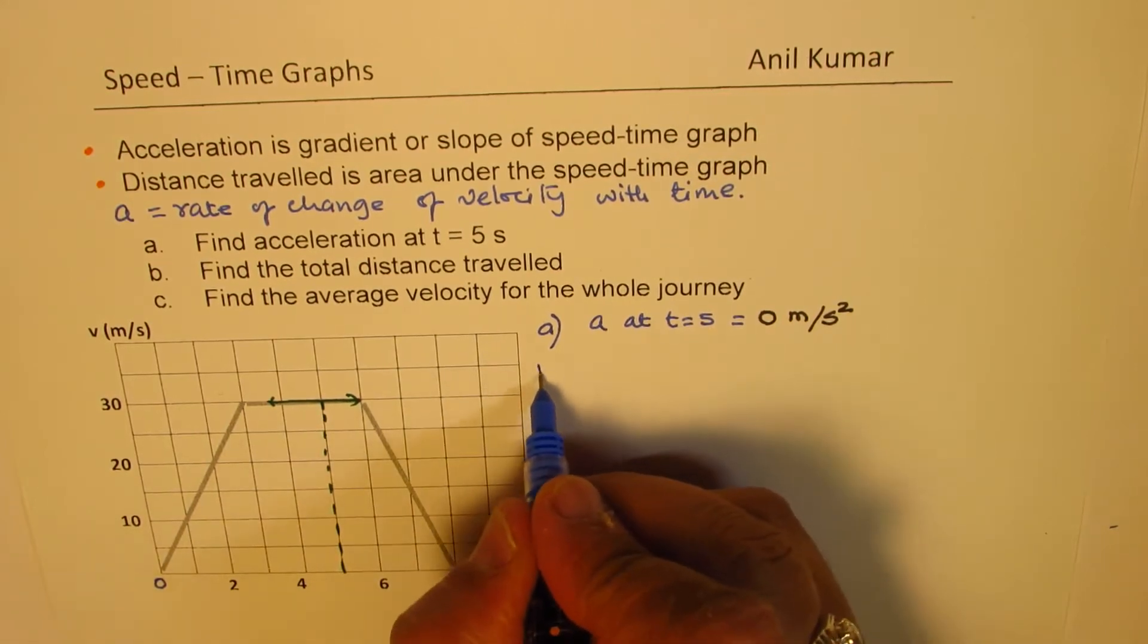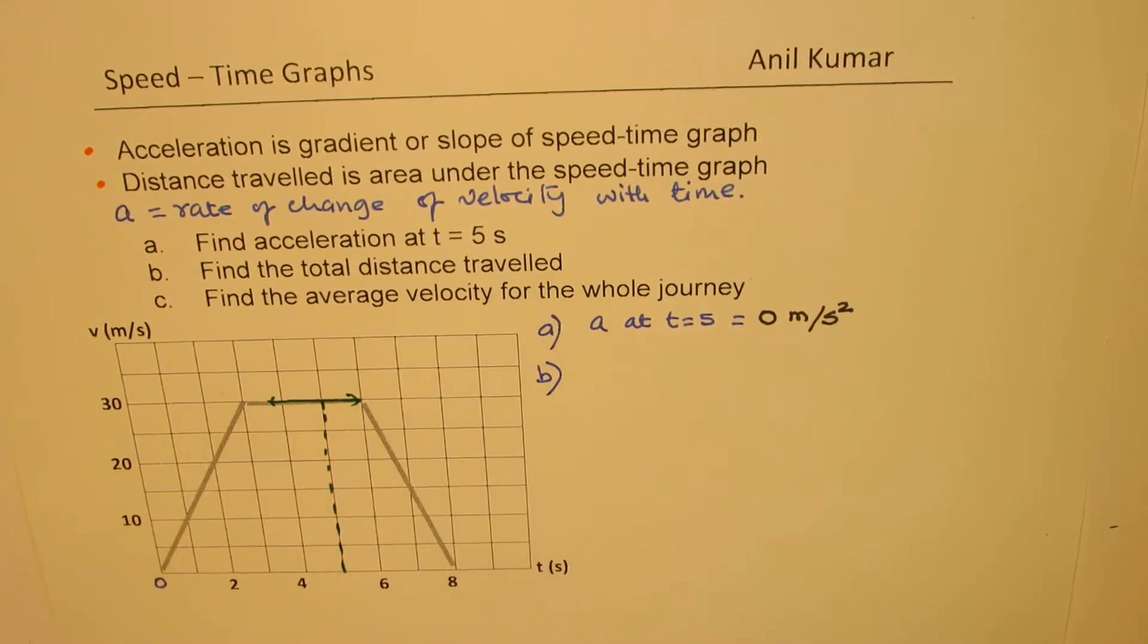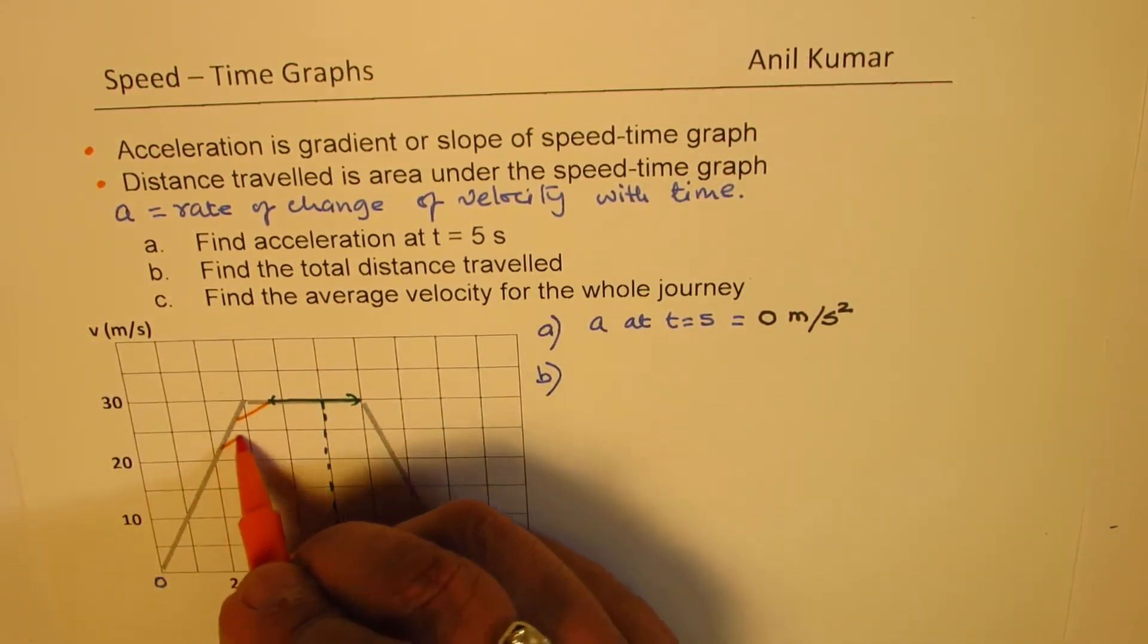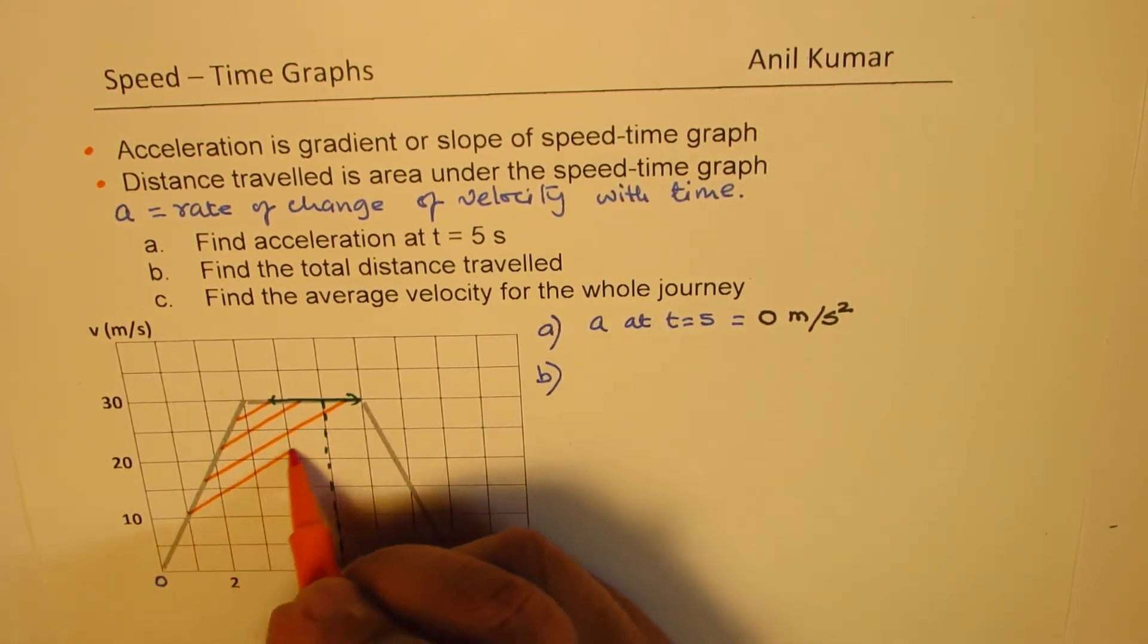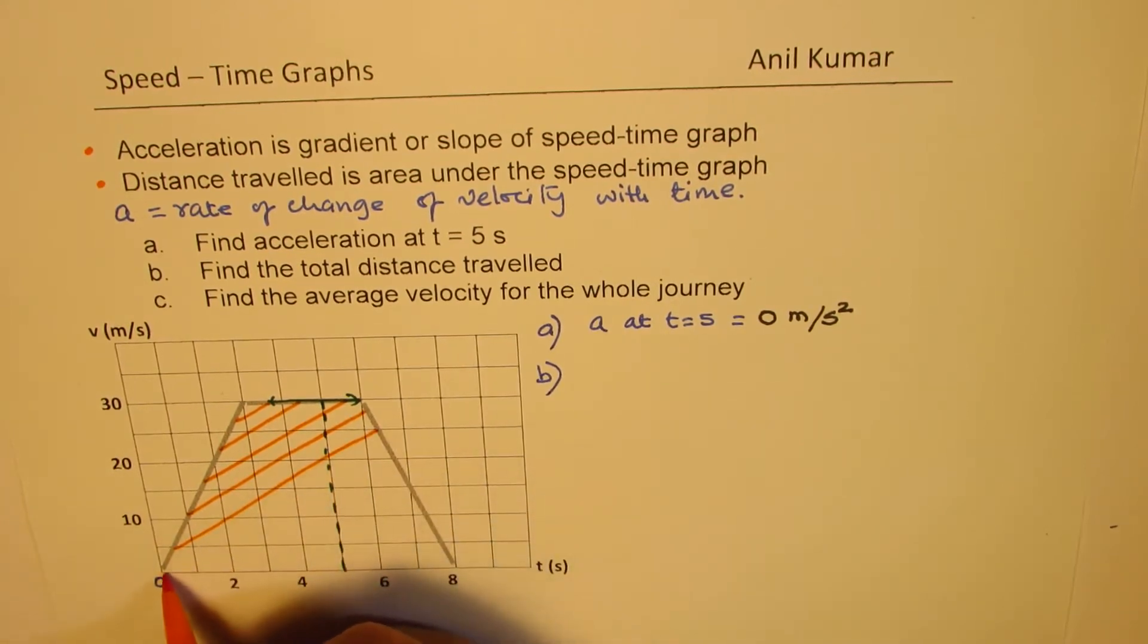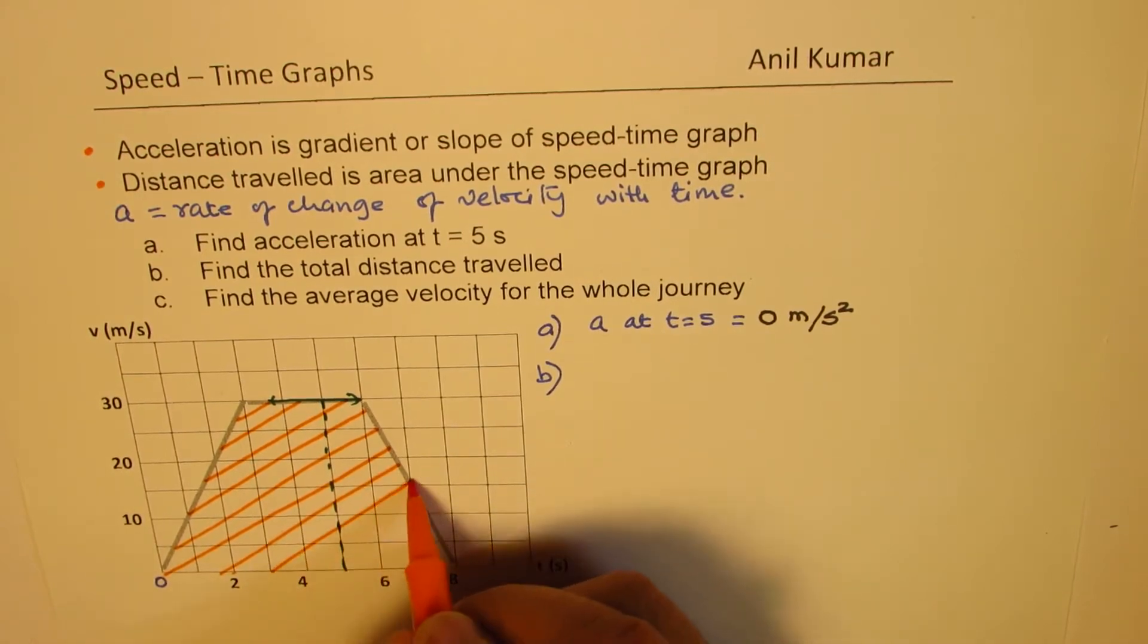Now, let's do part b, which is find total distance traveled. Now, total distance traveled will be area under this velocity time graph. So we need to calculate the area. So if you know the formula for trapezoid, that would be better to use. Otherwise, you could use sum of these two triangles and the rectangle to find the area. So I'm just giving you time to calculate. And then you should check with my solution.